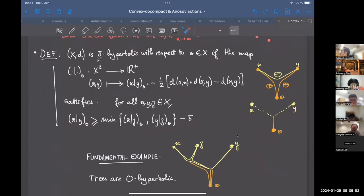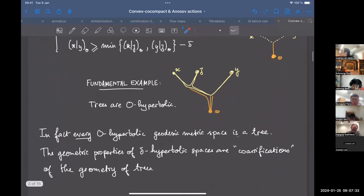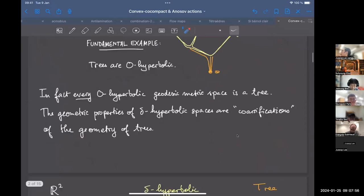Multiply by a half and you require that for every triple x, y, and z, the product (x·y) from O is at least the minimum of (x·z) from O and (y·z) from O minus a tolerance delta. So the fundamental example to have in mind here is that of trees. What happens in a metric tree? The product (x·y) from O is essentially the length of the path from O to the geodesic xy. Trees are zero hyperbolic in this sense. And in fact, every zero hyperbolic geodesic metric space is a tree.